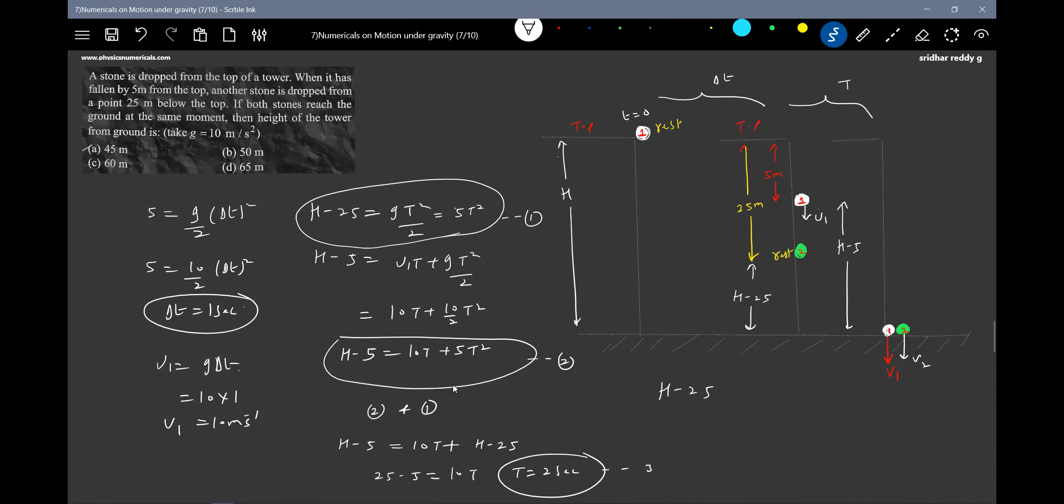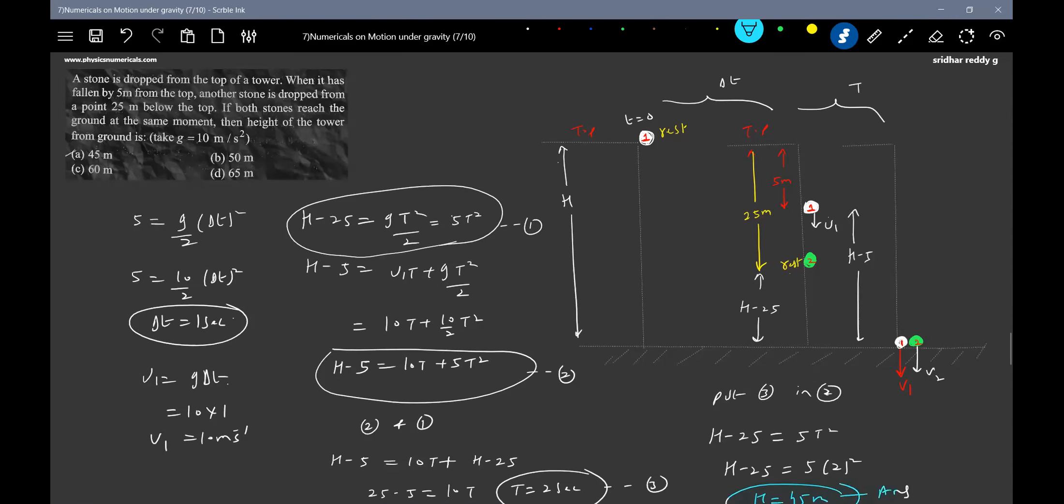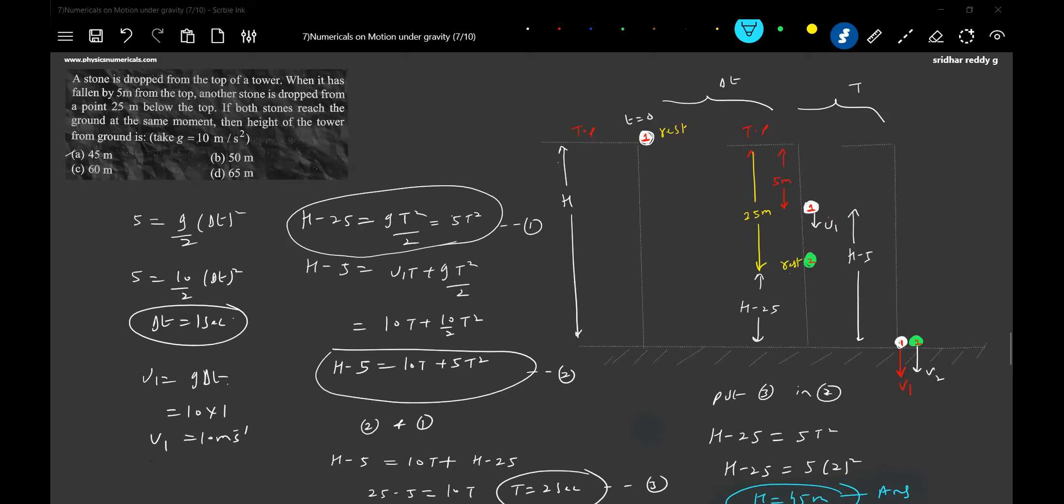There's equation 3, put 3 in 2. H minus 25 equals 5 t squared. H minus 25 equals 5 into 2 squared. H equals 45 meters. This will be our answer.